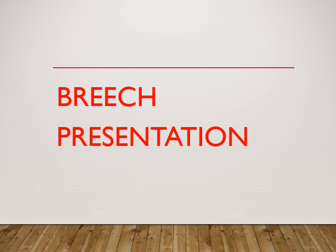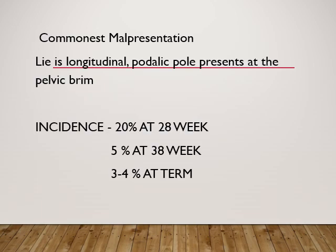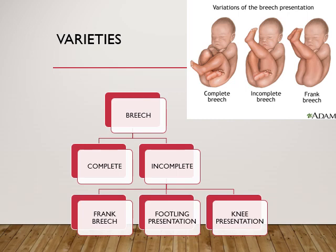Today I shall talk on breech presentation. This is the commonest malpresentation where the lie is longitudinal and the podalic pole presents at the pelvic brim. The incidence is 20 percent at 28 weeks; however, it reduces to around 5 percent at 38 weeks and 3 to 4 percent at term pregnancy.